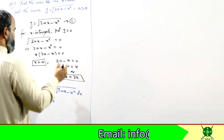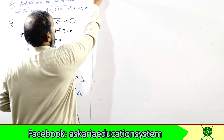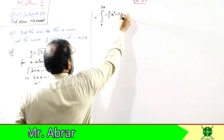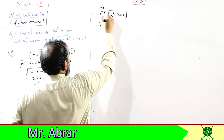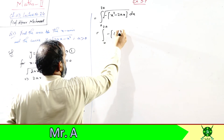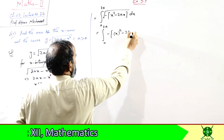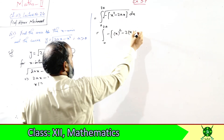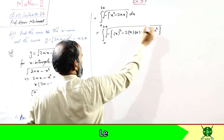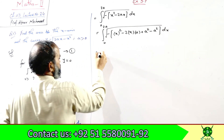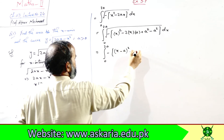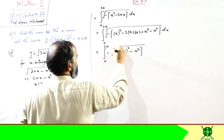Now, carefully integrate this. First, take −1 common inside the root to make the x² term positive, then complete the square. Writing −(x² − 2ax): completing the square gives −[(x − a)² − a²], which equals a² − (x − a)². So the integral becomes ∫₀²ᵃ √[a² − (x−a)²] dx.